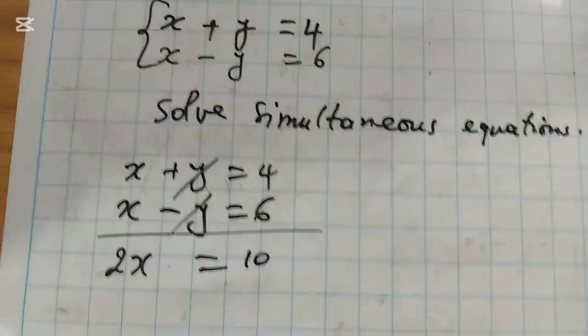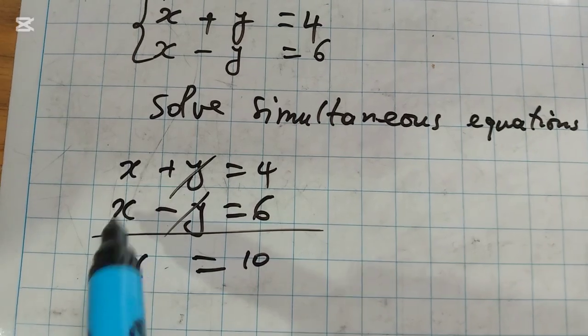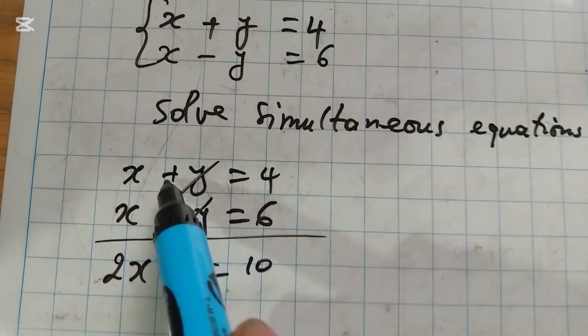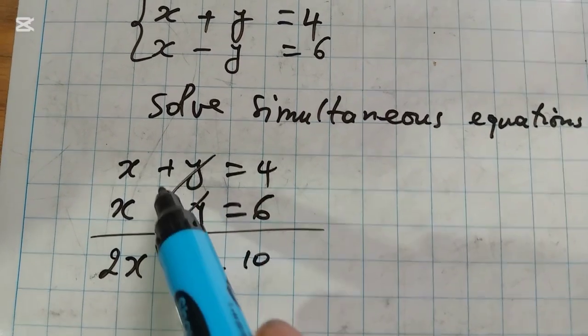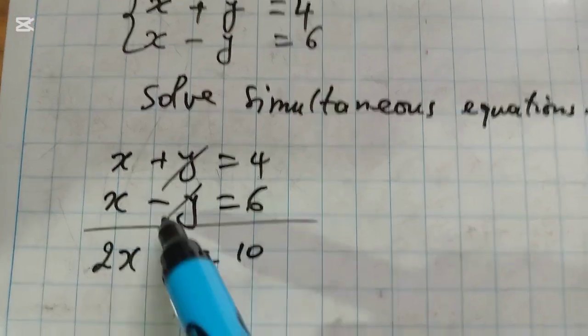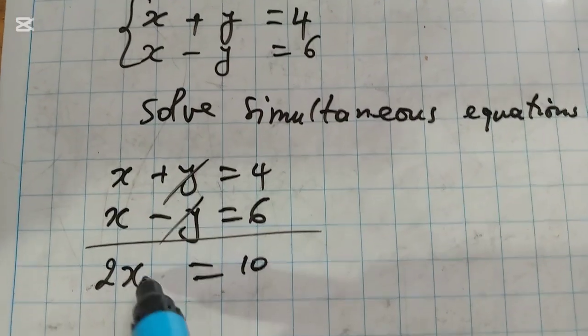When you add these two equations, X plus X equals 2X, and Y minus Y equals zero. Positive Y plus negative Y equals zero, that is why we have zero Y here.